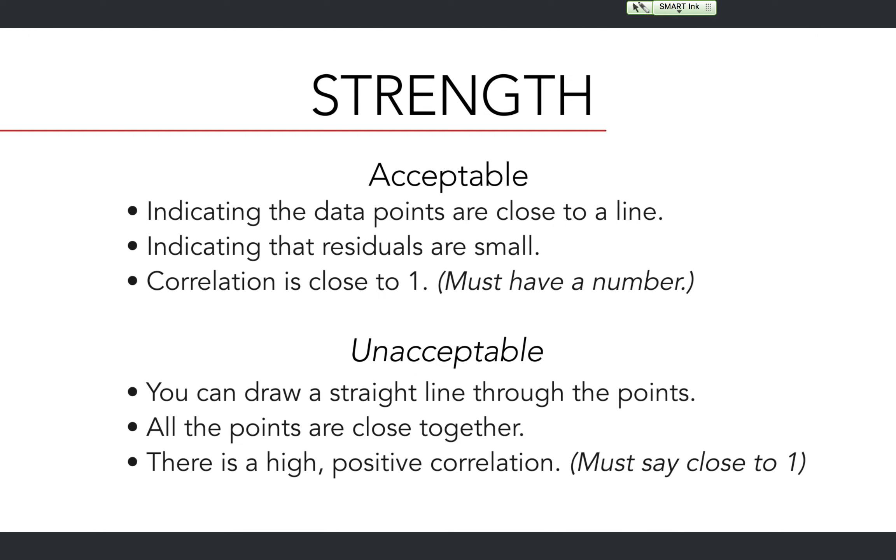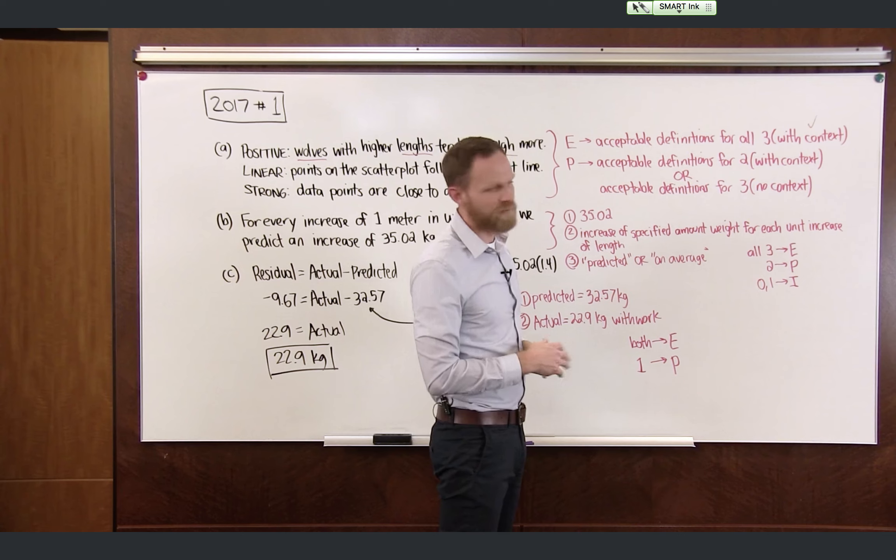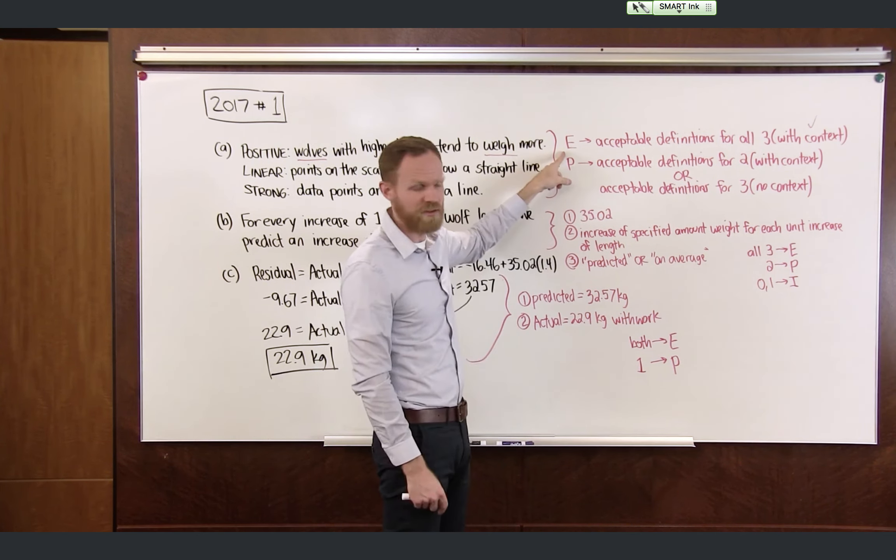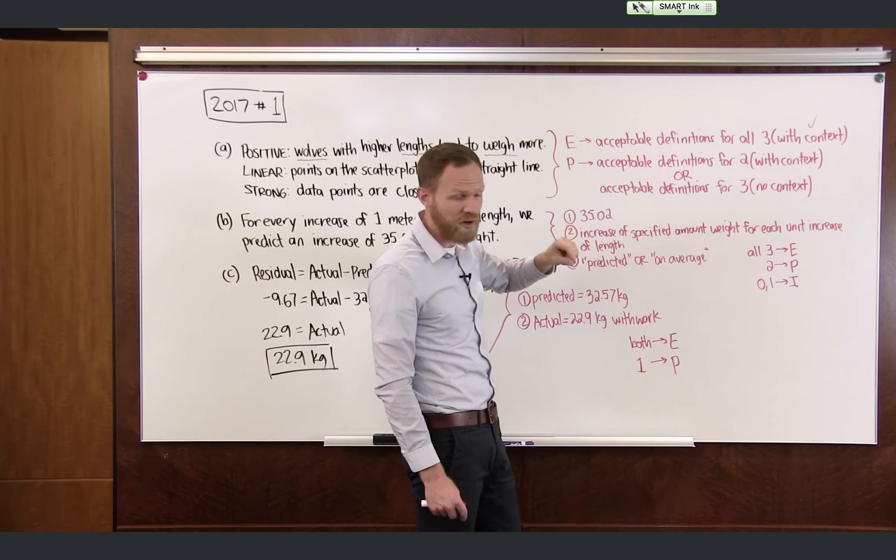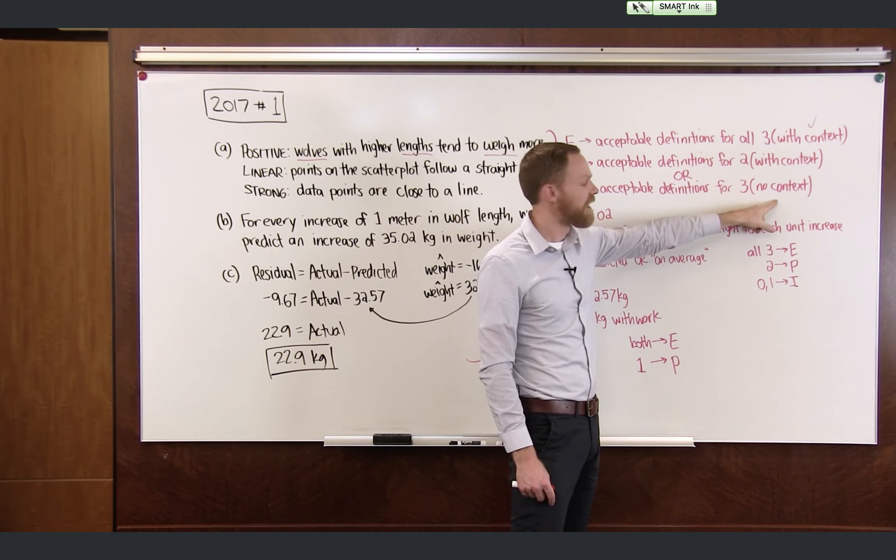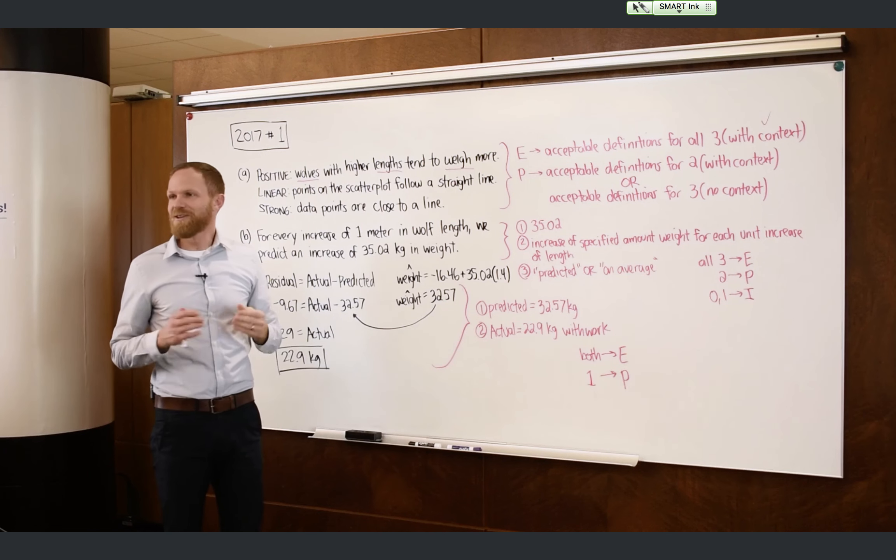Now let's take a look at acceptable and unacceptable responses for strength. Here are the acceptable responses. Indicating the data points are close to a line. Indicating that residuals are small. Correlation is close to one. Notice there the number one has to be there. There has to be a number. Now here are some that are not acceptable. You can draw a straight line through the points. All points are close together. And there is a high positive correlation. Notice there there's no reference to the value of one. So hopefully now you can decide whether you have acceptable definitions for all three. If you do with the context, give yourself an essentially correct. If you only had acceptable definitions for two of them with the context, you get a partially correct. Or if you had all three acceptable definitions but you forgot your context. Anything less than this would be I for incorrect.